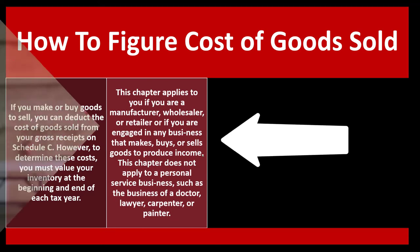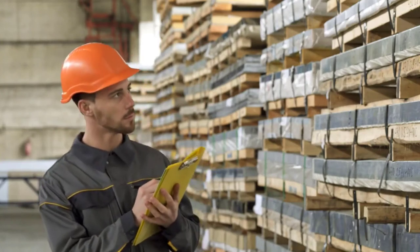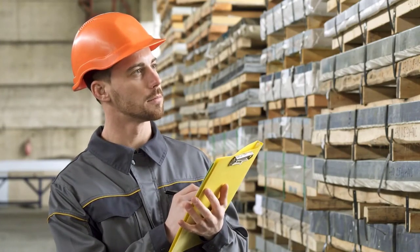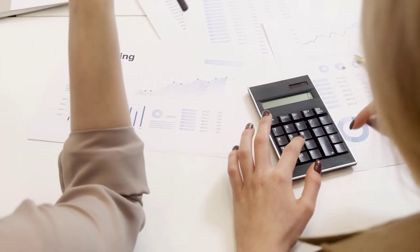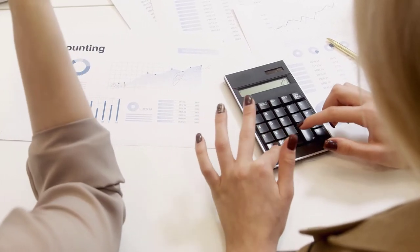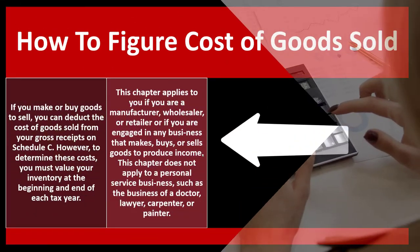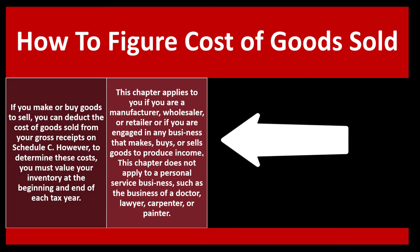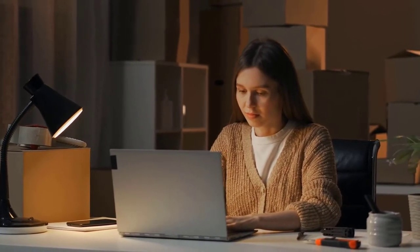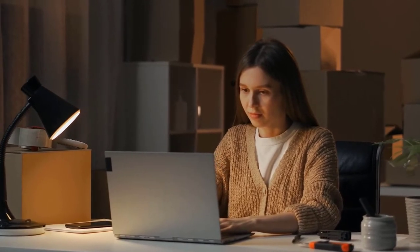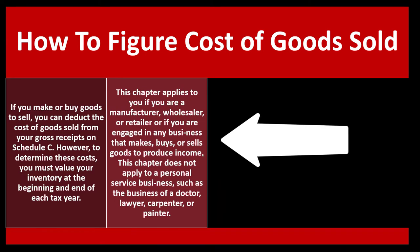If you're a wholesaler or retailer — you just buy goods, mark them up, and sell them — it's usually an easier calculation: beginning inventory plus purchases minus ending inventory. If you actually manufacture the goods, it gets more complex: beginning inventory plus the goods you're making, which could include a whole manufacturing calculation covering labor, materials, and overhead.